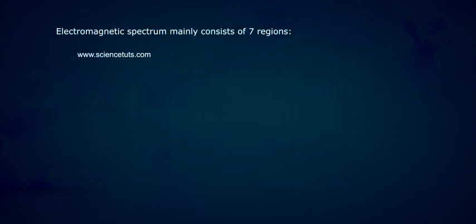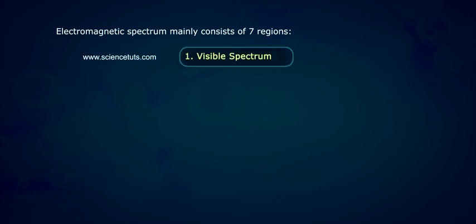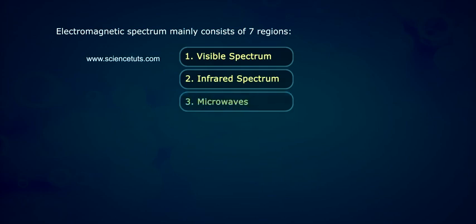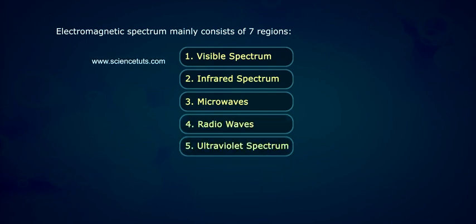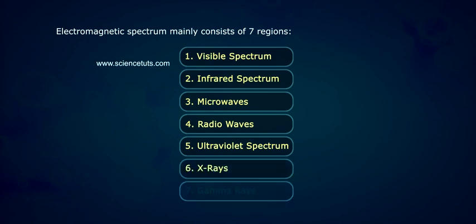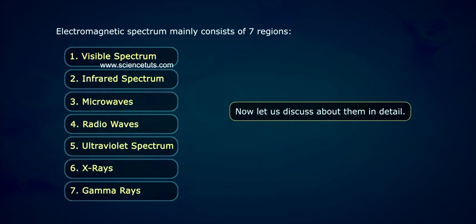Electromagnetic spectrum mainly consists of seven regions: 1. Visible spectrum 2. Infrared spectrum 3. Microwaves 4. Radiowaves 5. Ultraviolet spectrum 6. X-rays 7. Gamma rays. Now let us discuss about them in detail.